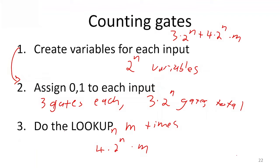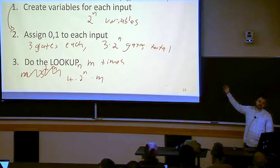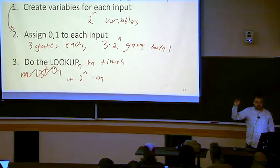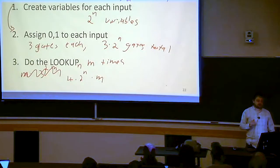So 3 times the number of variables. So we have 3 times 2 to the n plus 4 times 2 to the n times m. Basically what we're doing right now is we're counting the number of gates that this procedure, an upper bound on the number of gates that this procedure is going to use.